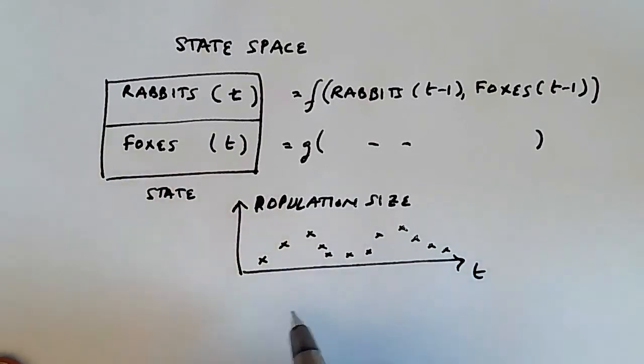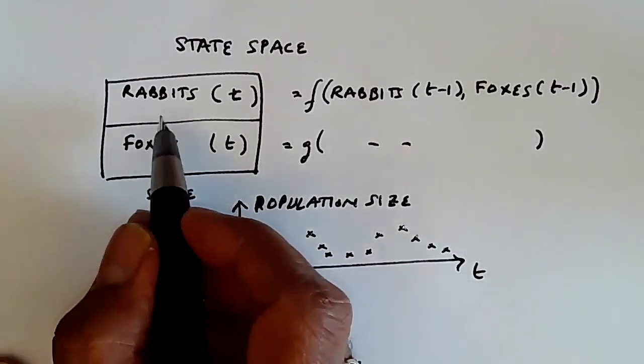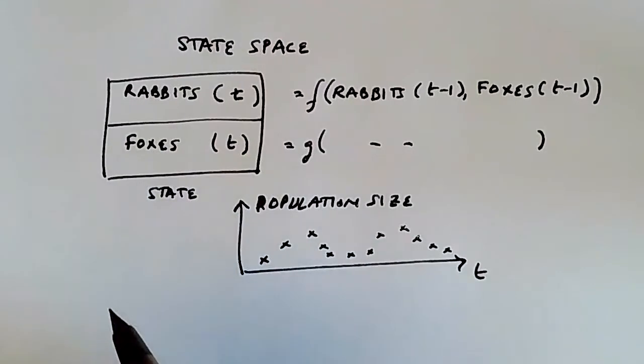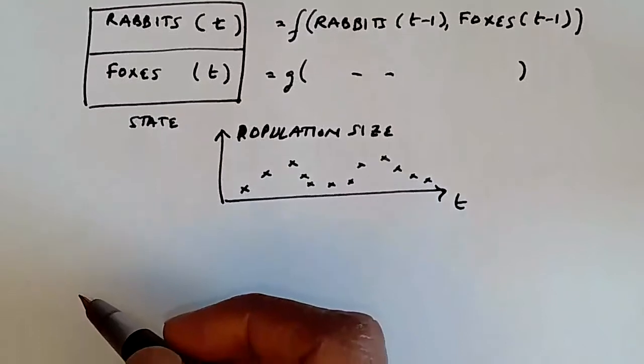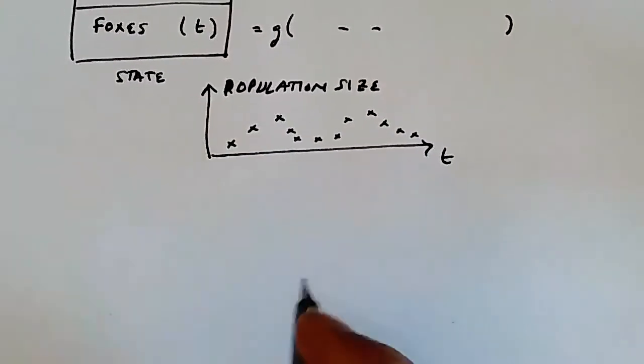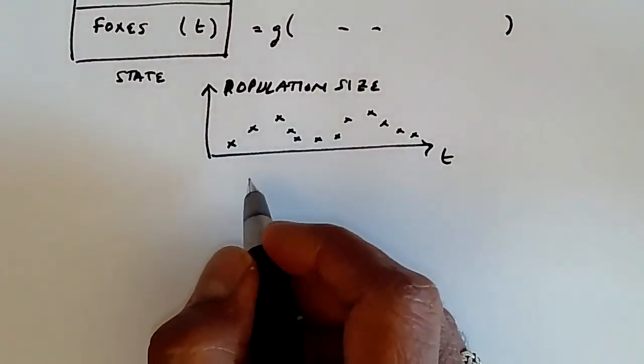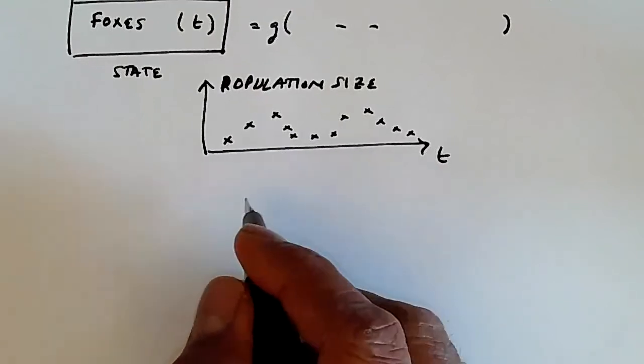This is the dynamic evolution of the state variable rabbits t over time. And this is the state space. Now, the important thing to notice is that each simulation run, or each time you run the simulation,